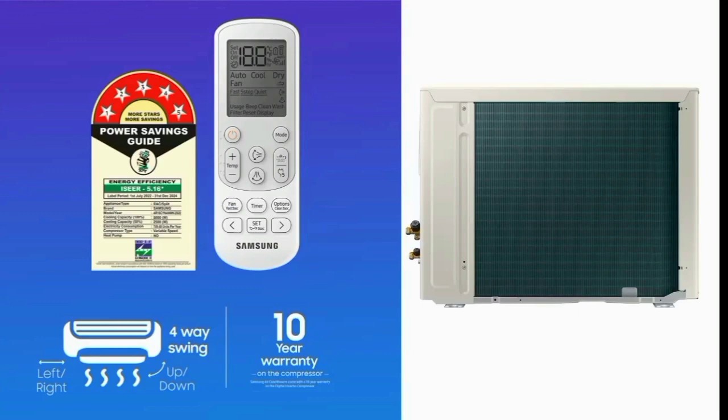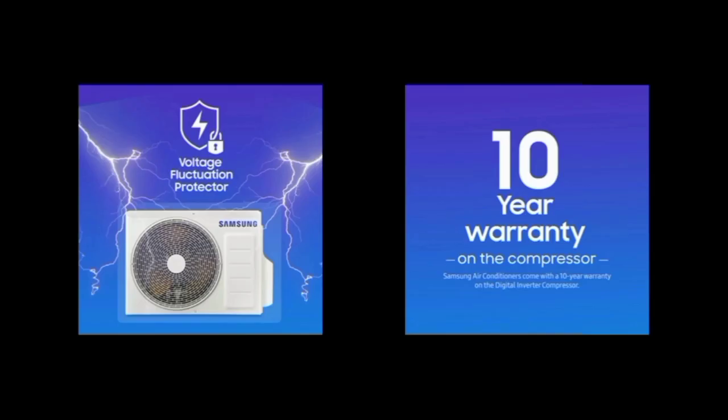This product is here. If you notice, the power can fluctuate — sometimes less and sometimes fewer. This fluctuation can damage the product. That's why Samsung provides voltage fluctuation protection. With this Essex protection, it removes power fluctuations and keeps the AC running safely.